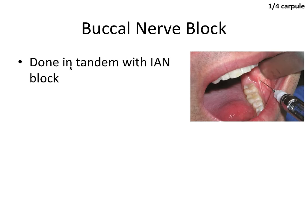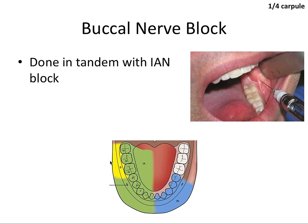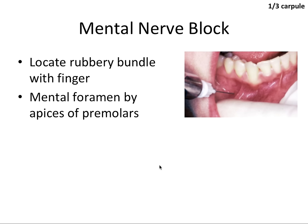The buccal nerve block is done in tandem with the IAN block. You inject buccal to the terminal molar, approximately parallel to the mandibular occlusal plane, to anesthetize the long buccal nerve that supplies the soft tissue buccal to the molars.